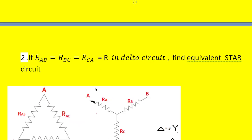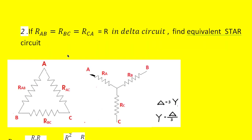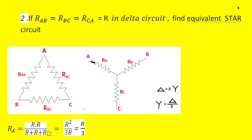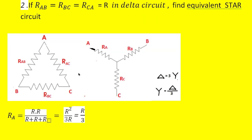Moving to the second problem: a delta connection is given and we want to know the equivalent star circuit. Here also it is mentioned that each branch resistance in the delta is equal to capital R. This is the delta with terminals A, B, C, and each branch has resistance Rab, Rbc, and Rca, all equal to capital R. We want to find the equivalent star-connected resistance.